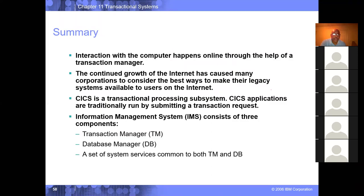So there are four types of messages. I don't know to the degree the book goes into detail about this, but transactions go to another logical destination, commands for IMS and IMS application control feature process. Okay. So we're done with chapter 11. I didn't think we'd get done that fast. That's good though. Interaction with the computer happens online through the help of a transaction manager. And again, there's chapter 11. I think I duplicated chapter 10 and I call one one of the dupes of chapter 10, chapter 11, but you can just look at this. This will be online. The continued growth of the internet has caused many corporations to consider the best ways to make the legacy systems available to use on the internet. CICS is the transactional processing subsystem, CICS applications are traditionally run by submitting a transaction request. Information management system consists of three components, the transaction manager, the database manager, and the services that tie them together. That's it.